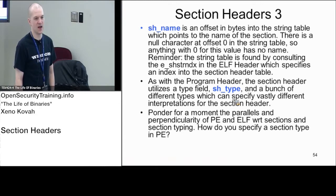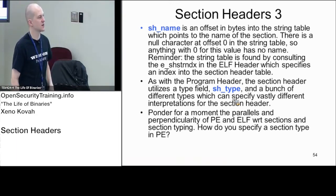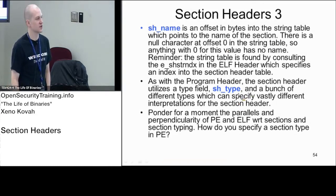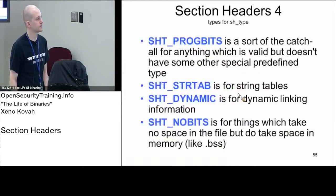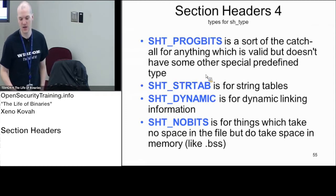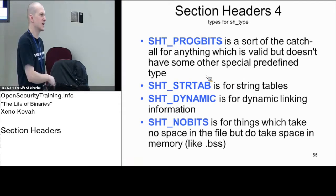This is different from sections in PE, where sections were just mapped-in data and anything special was indicated by the data directory. In ELF, the linker uses specific types for different sections to track where information lives. PROGBITS is the catch-all type — if a section is PROGBITS, it's just code or data, basically generic bits. Everything besides PROGBITS means it's some special section predefined in the specification.